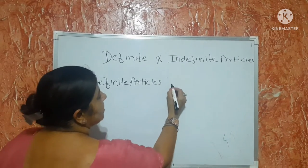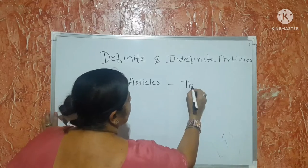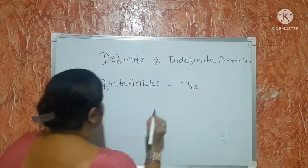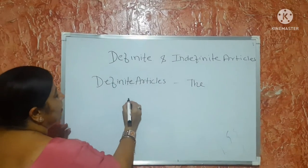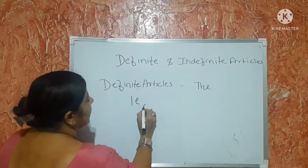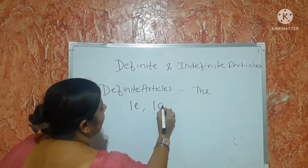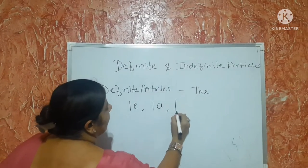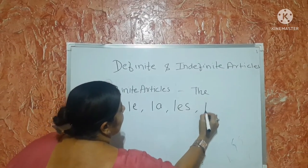Definite articles are denoted by 'the'. There are four ways to write them: le, la, les, and l'apostrophe.